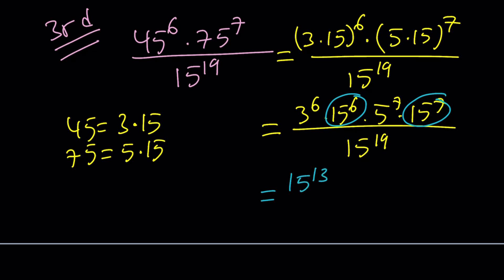And then I do see a 3 to the 6th with 5 to the 7th. They don't have the same base, they don't have the same exponent. But if we separate one of the 5's, this gives us 3 to the 6th and 5 to the 6th, which gives us 15 to the 6th, and then we'll have a leftover 5. Make sense? And then divide that by 15 to the power 19.